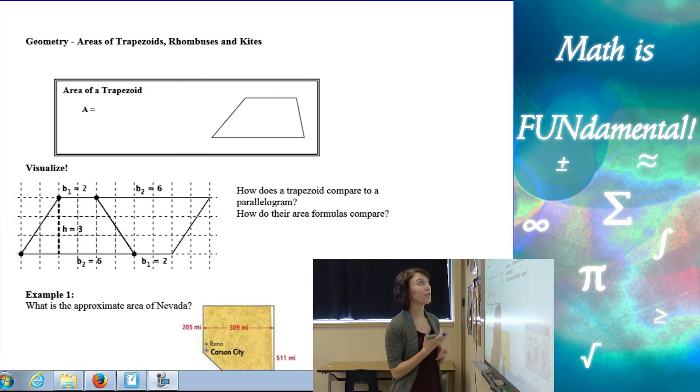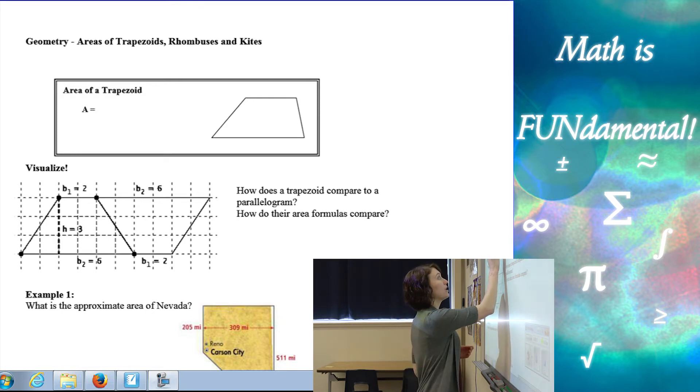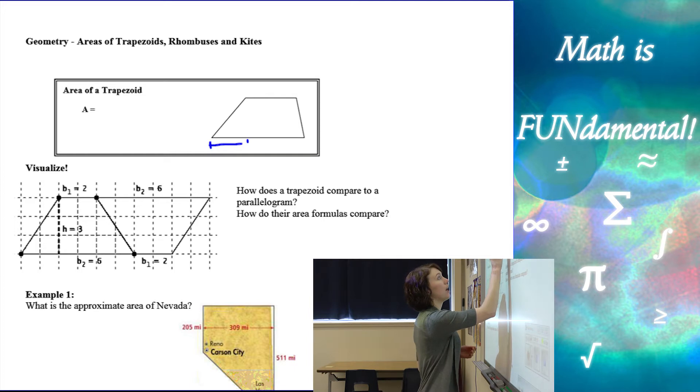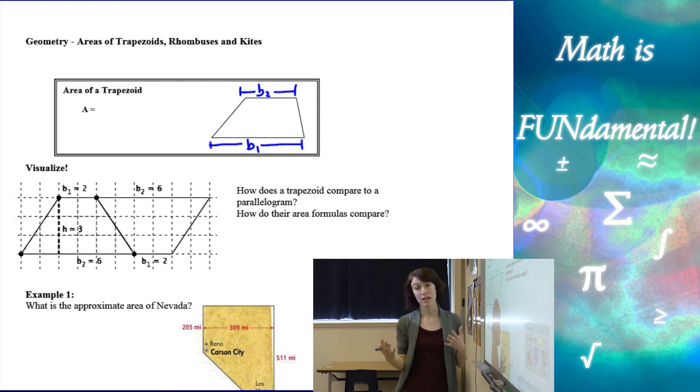We have area of a trapezoid. So here's a picture of a trapezoid. In a trapezoid we have two sides that are parallel and we call those bases. So we can make this equal to base one and this one equal to base two. They're always going to be different lengths, base one and base two.